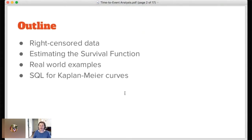We're going to talk a little bit about what right-censored data is, and then about what a survival function is and how to estimate it. I have a couple of real world examples I'll show you, but they're kind of boring industry, paying money customer examples. And then we'll take a little detour into the SQL to actually compute these curves.